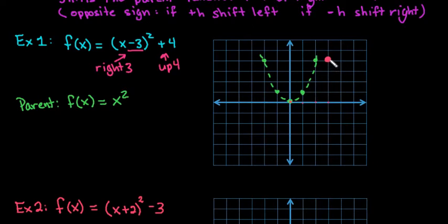The pattern is it always goes to the right 1, up 1, and the right 2, 1, 2, 1, 2, 3, 4. So this one's going to go off of my graph, so I'll just put a point up there.